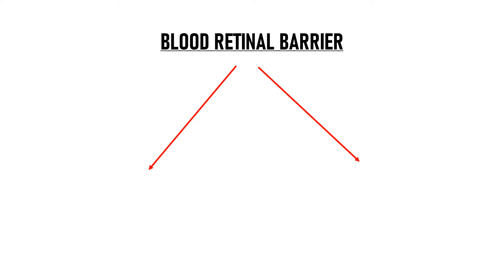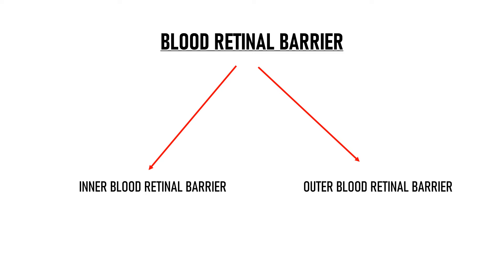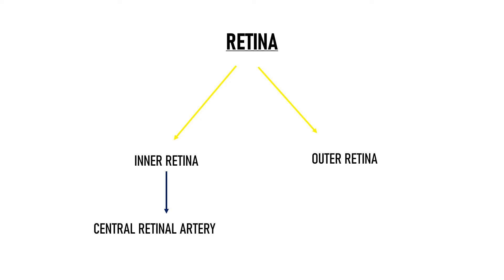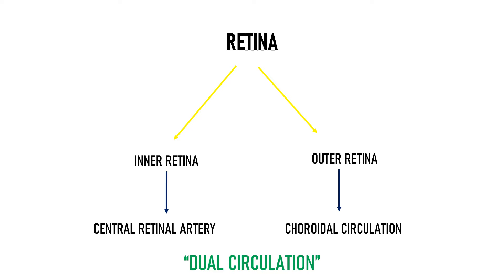There are two types of blood retinal barriers: the inner blood retinal barrier and the outer blood retinal barrier. The retina can be divided into two parts — inner retina and outer retina. The inner retina gets its blood supply from the central retinal artery, while the outer retina gets its blood supply from the choroidal circulation, meaning the retina has dual circulation. Blood reaches the retina through two separate routes, and thus two different barriers are needed to prevent the influx of toxins, ions, and antigens from the blood to the retina at the inner and outer retinal levels.